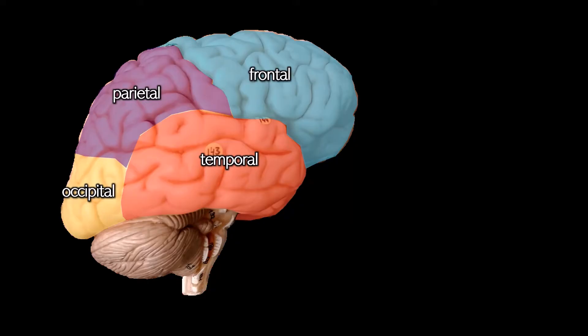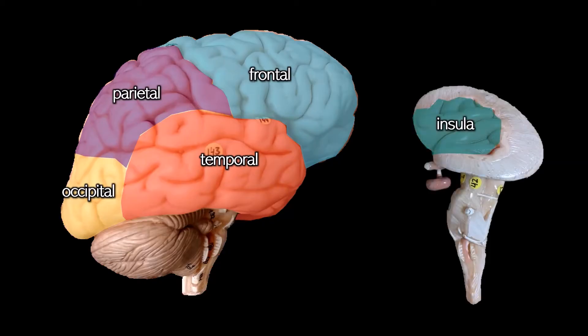The last lobe we cannot see from the outside. You would have to pull back the temporal lobe to see the insula. On this model, they've just removed the brain stem and kept the insula on top so you can see it. The insula is called that because it is insulated — it's hiding on the inside of your brain. It has the gustatory cortex for taste and the olfactory cortex for smell. It also allows you to perceive visceral sensation, which is the sensation of your organs. So when somebody touches you on your arm, you're going to feel that in the somatosensory cortex in the parietal lobe. But if you have an upset stomach or your bladder is full, you're going to perceive that with your insula.